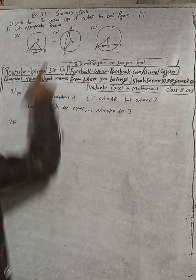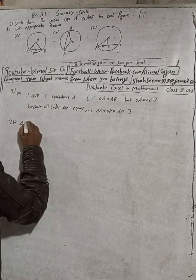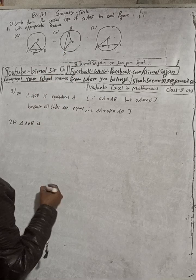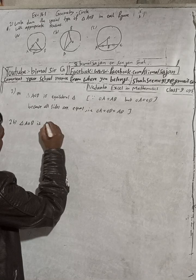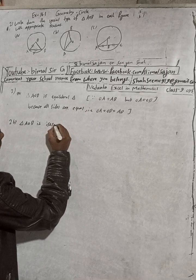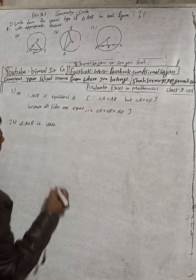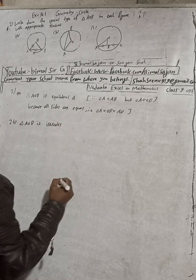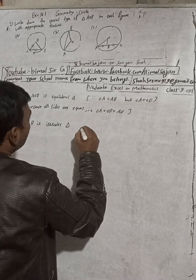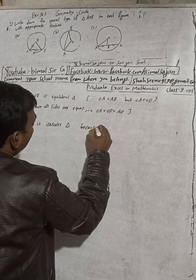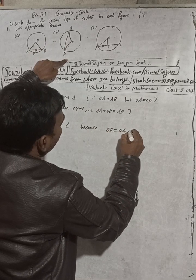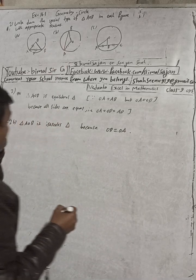Number 2b: Triangle AOB is an isosceles triangle. The pronunciation is isosceles. Because OB is equal to OA, as both are radii of the same circle.